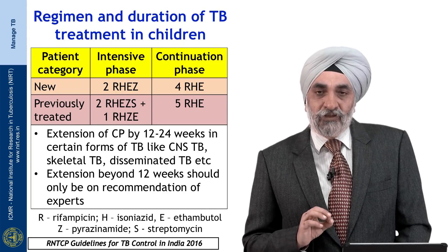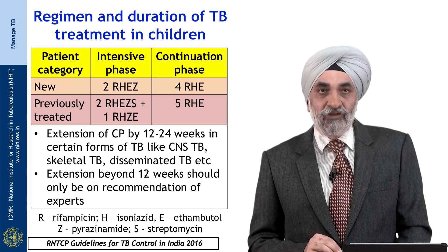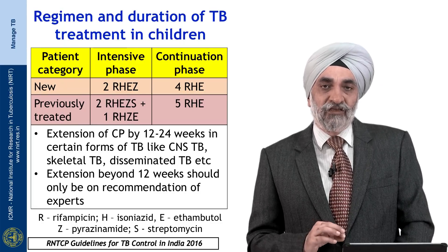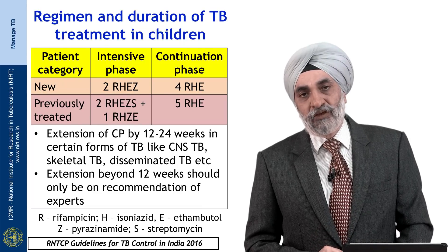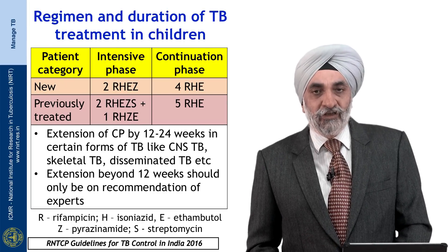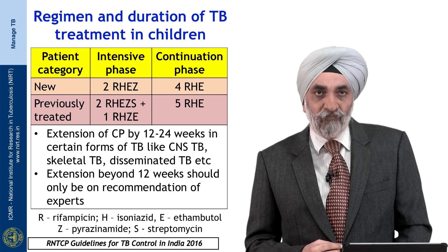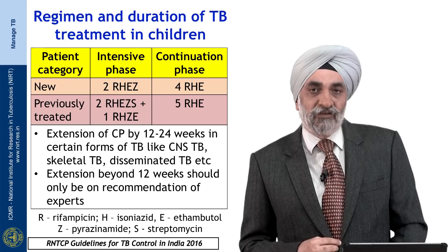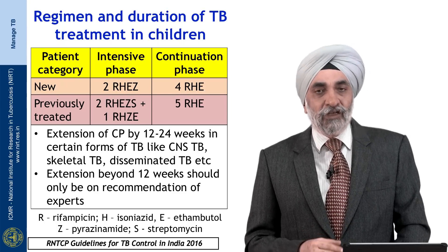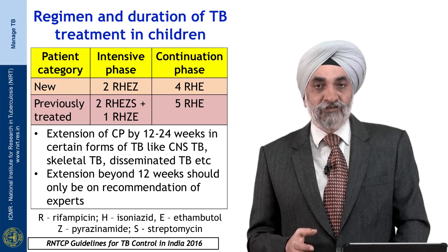Further extension of the continuation phase is recommended only on an individual basis occasionally, not routinely. In a patient treated in the past for more than 4 weeks — whether recurrent, after treatment interruption, or failing initial therapy — what is recommended is investigation for drug-resistant TB. Pending those results, they may be started on a retreatment regimen containing all 5 first-line drugs together: rifampicin, INH, pyrazinamide, ethambutol, and streptomycin given for 2 months. If a bacteriological diagnosis with known sensitivity is obtained, therapy is fine-tuned accordingly.